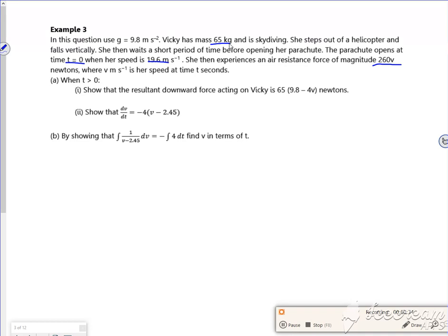So then part A says, show that the resultant downward force. Right, so we're working out F first. So if you imagine, let me move that actually. Let's draw a picture. So here's our Vicky. She's got a mass of 65 kilos, so she's got 65G.